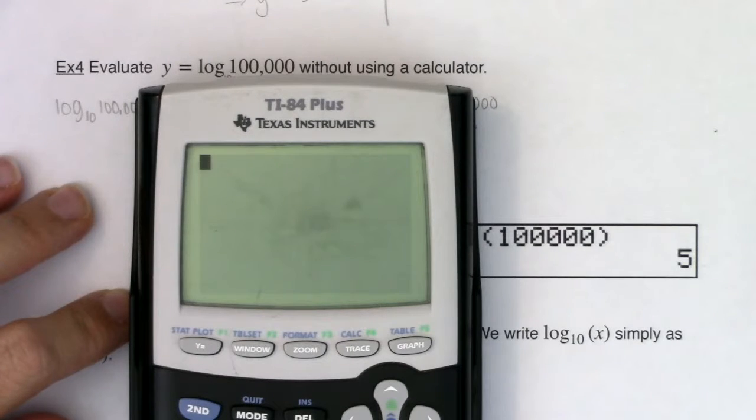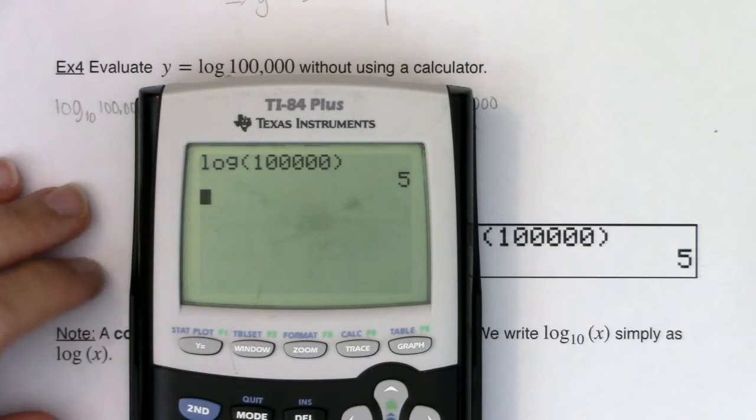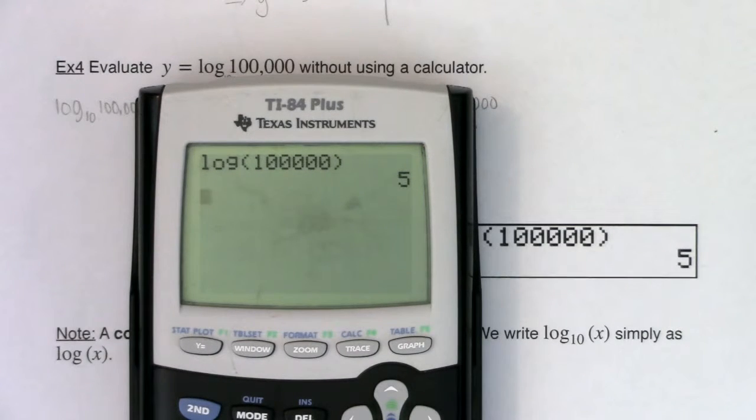So let's go down here and hit that log button and then type in your argument of a hundred thousand. You have this common log. You entered that button, gave it the argument, hit enter, and there it is. You get your common logarithm of a hundred thousand is equal to five.